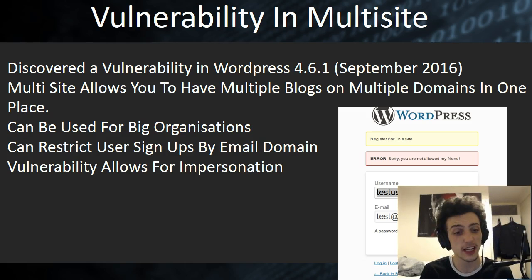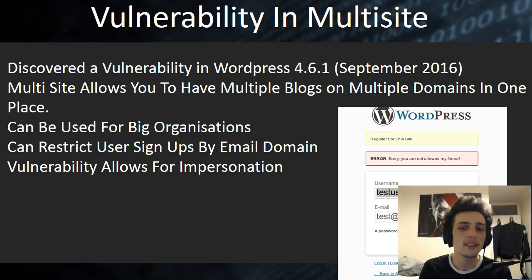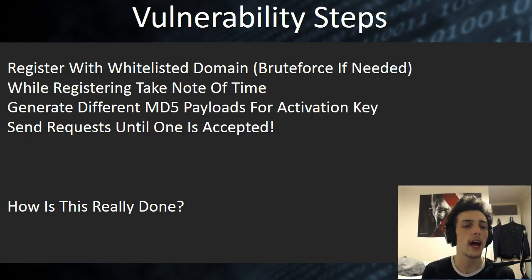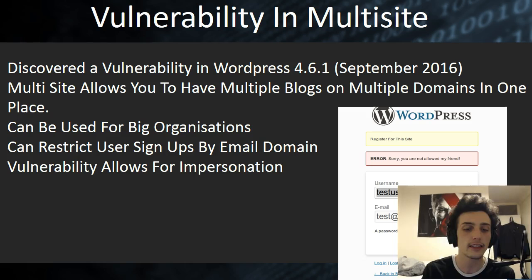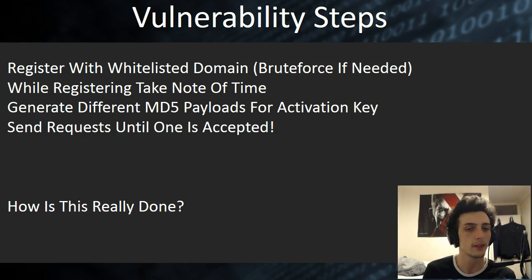The vulnerability essentially allows for impersonation and also bypasses some restrictions if they're enabled. It's non-critical — that's how I described it in a blog post. It's a vulnerability, but it's not as harsh as it seems. The steps would be to register with a whitelisted domain — you could brute force this. Essentially, if they've turned on the restriction for user signups by email domain, you could guess or brute force it, or do some social engineering to find that out.